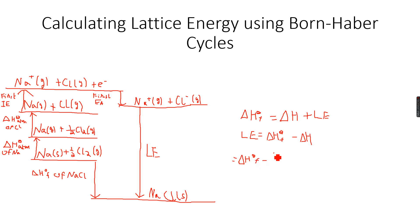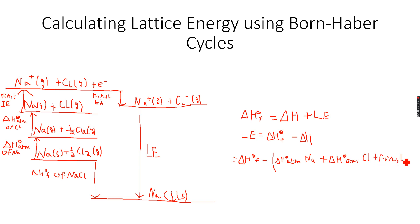So the full formula is: ΔH°f minus the enthalpy change of atomization of sodium (ΔH°atm of Na), plus the enthalpy change of atomization of chlorine (ΔH°atm of Cl), plus the first ionization energy of sodium, plus the first electron affinity of chlorine. This is the formula for calculating the lattice energy of sodium chloride.